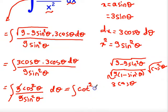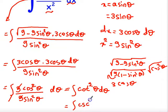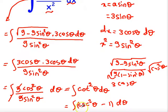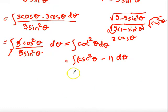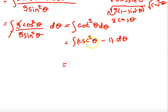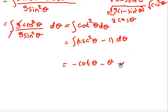Now, cot²θ = csc²θ − 1. We know the integral of csc²θ is −cotθ, and the integral of 1 is θ, so the result is −cotθ − θ + C.